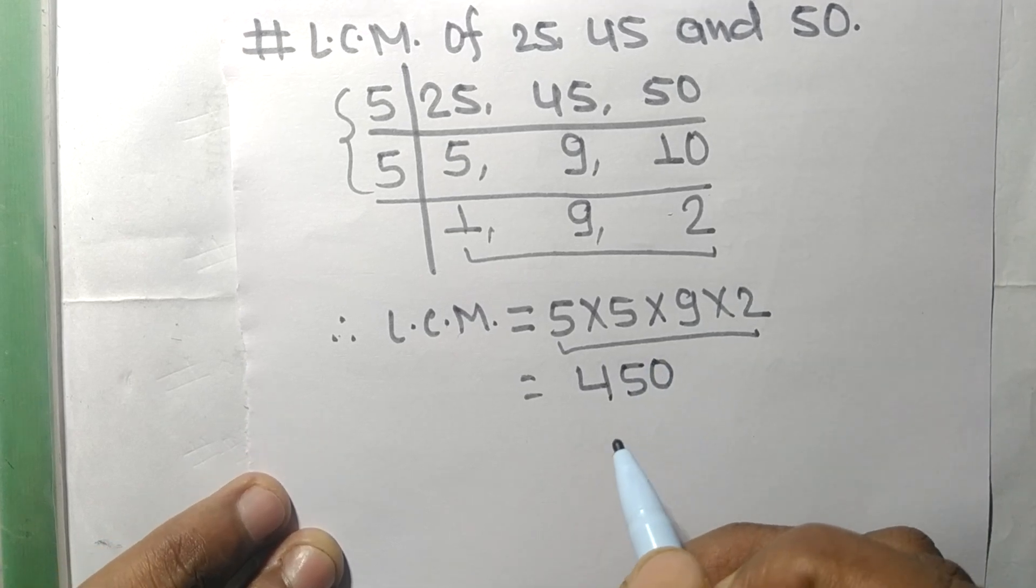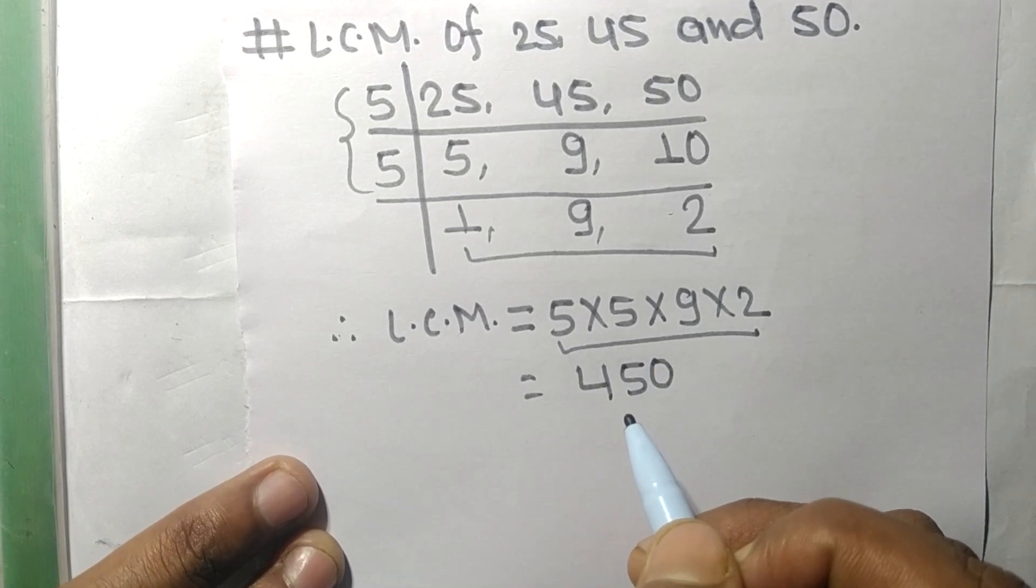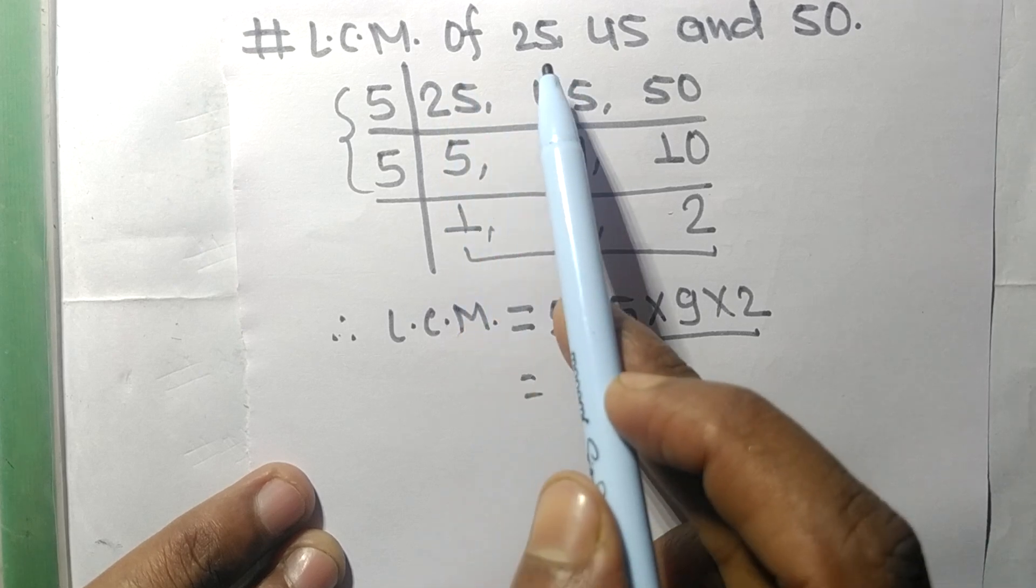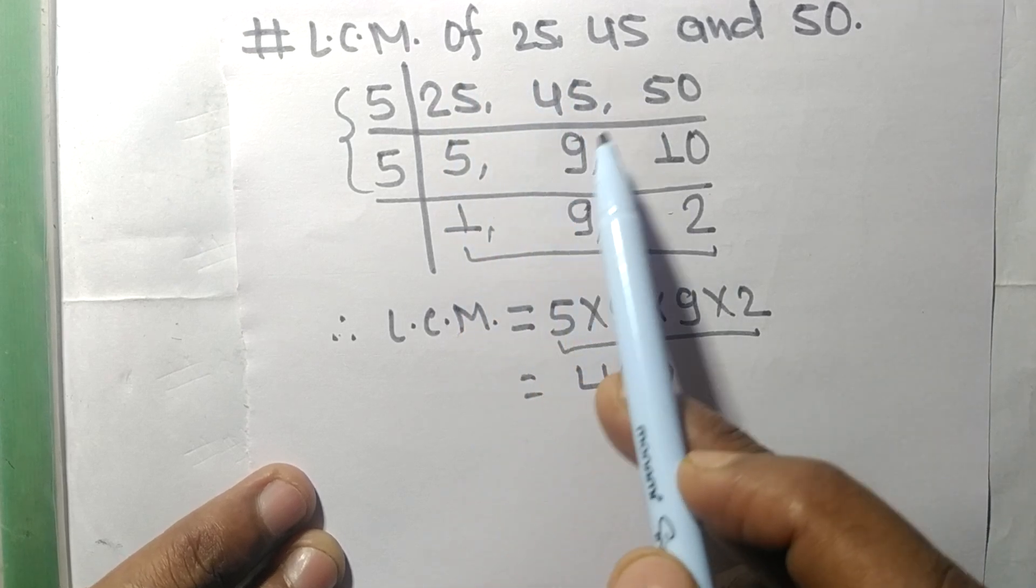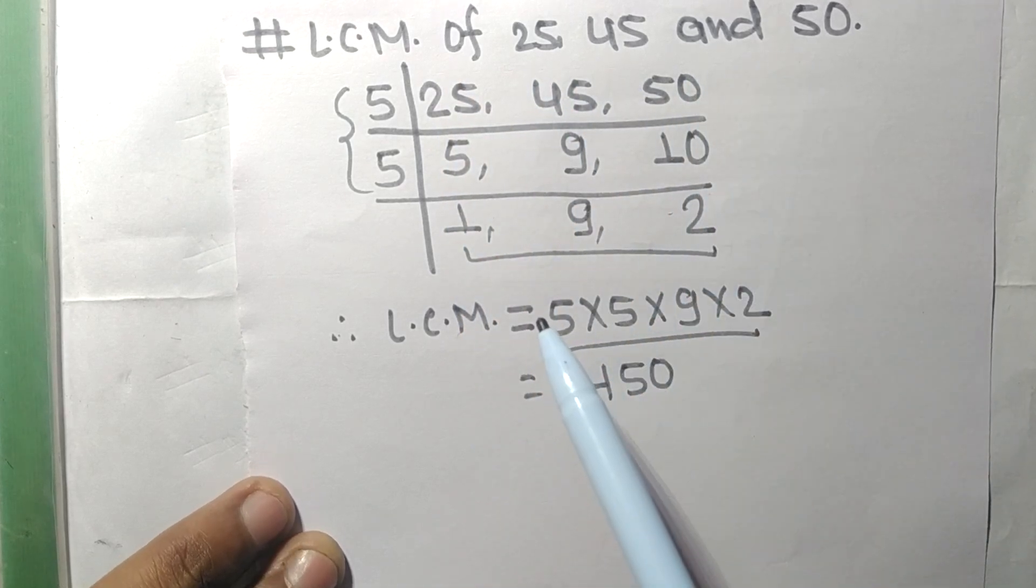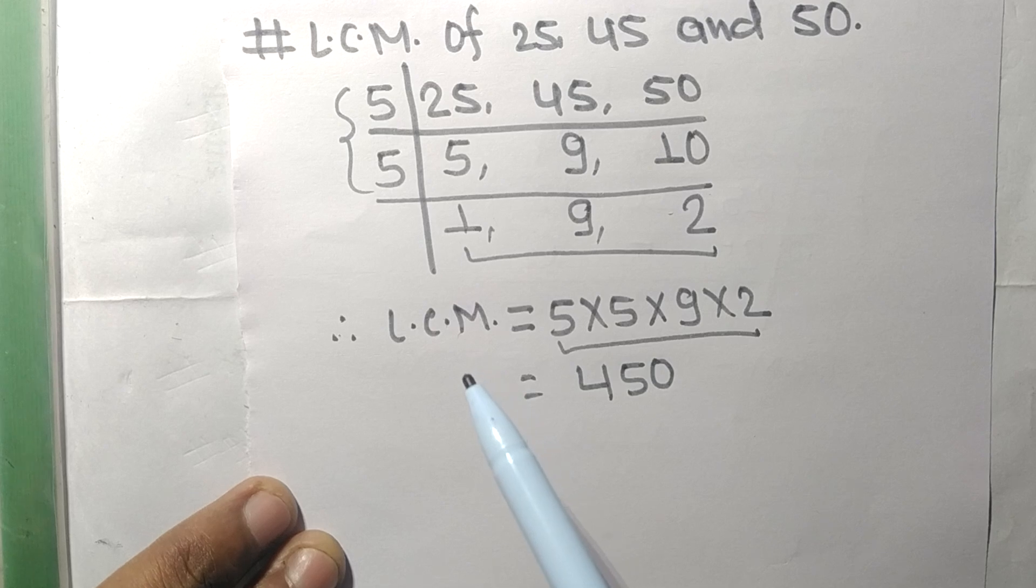So 450 is the LCM of 25, 45, and 50. This much for today, and thanks for watching.